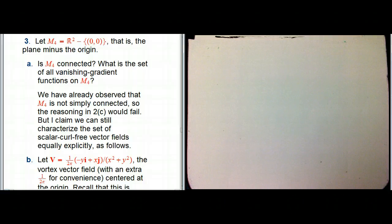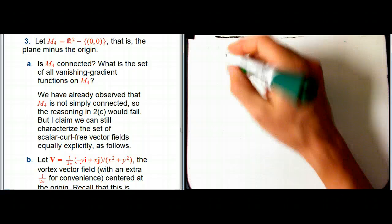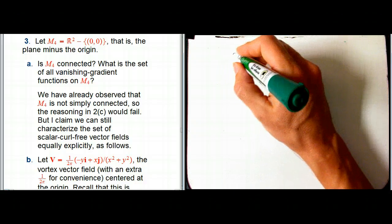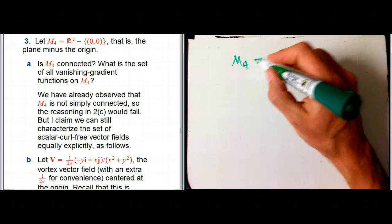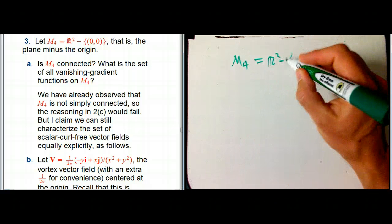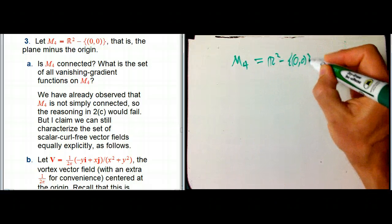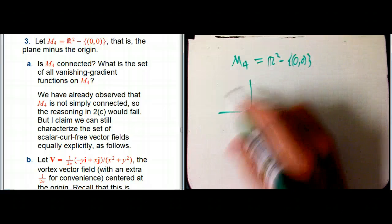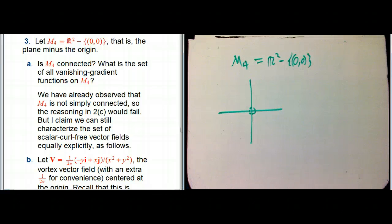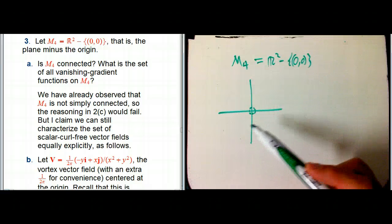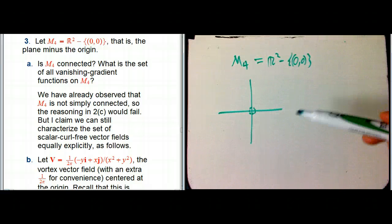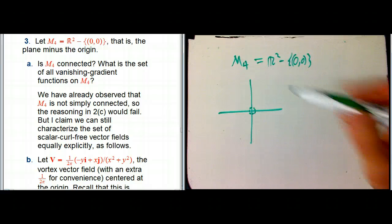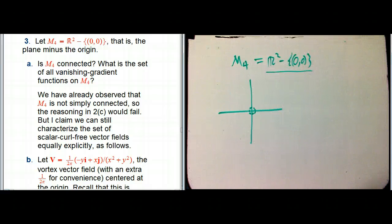Let's continue with our study of topology and how it relates to vector calculus, also allowing ourselves to use differential form terminology. M4 is the plane minus the origin — we're going to delete the origin, so that's not going to be allowed in our space. For example, maybe you have a vector field that blows up there, and you want everything to be continuous and differentiable everywhere on the space, so you just declare the origin to not be in the space.